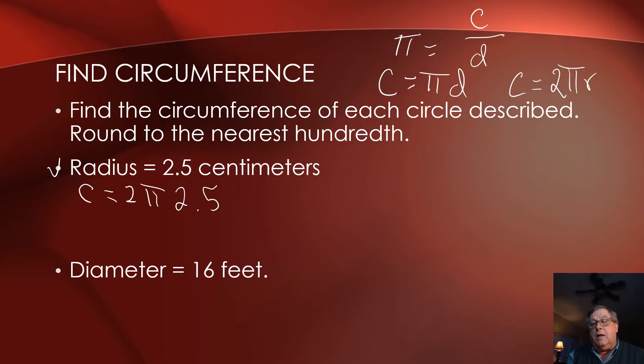Let me grab the calculator. 2π times the radius of 2.5. So the circumference rounded to the nearest hundredth is 15.71 centimeters. Don't forget your units of measurement.